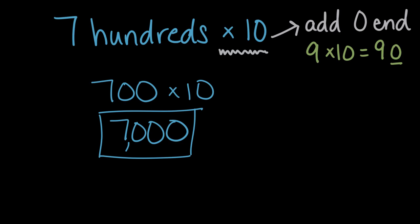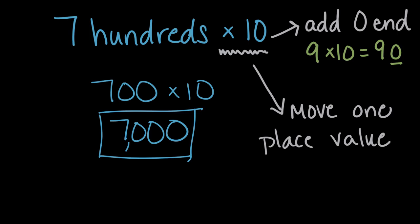But there's another pattern we could use here, another pattern to think about when we multiply by 10, and that is that when we multiply by 10, we move every digit one place value, one place value left, or one place value greater.